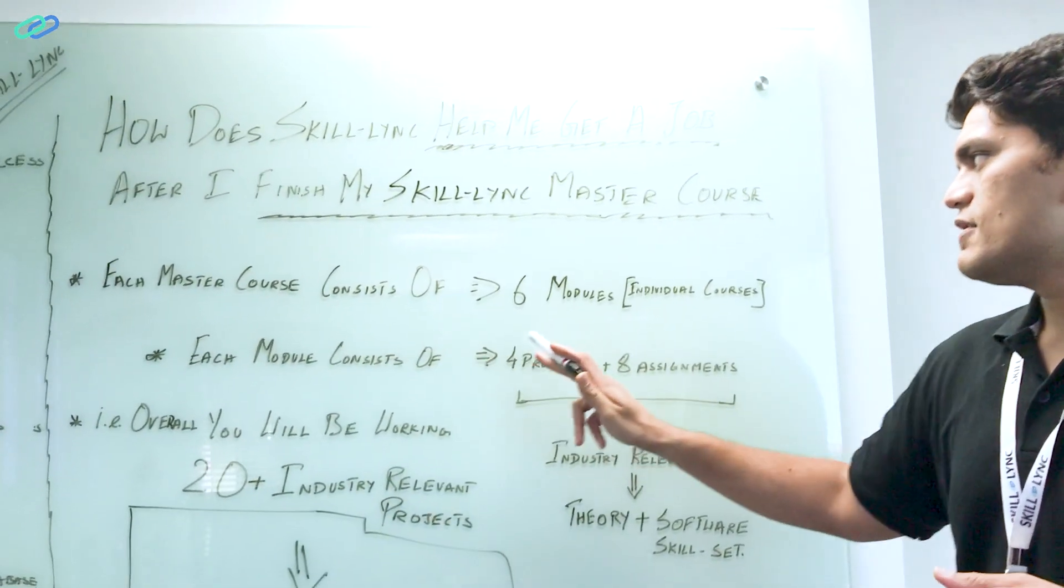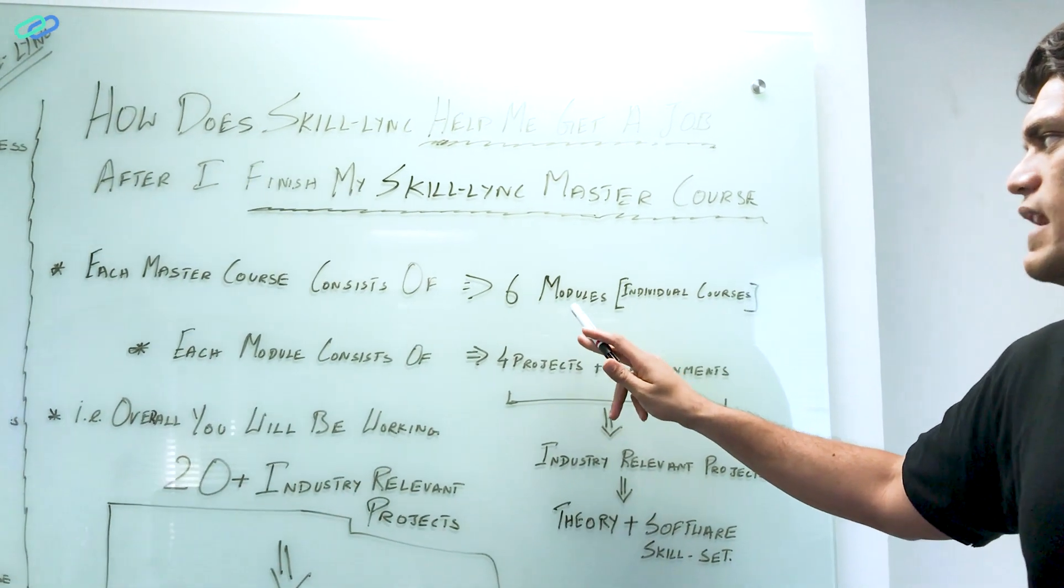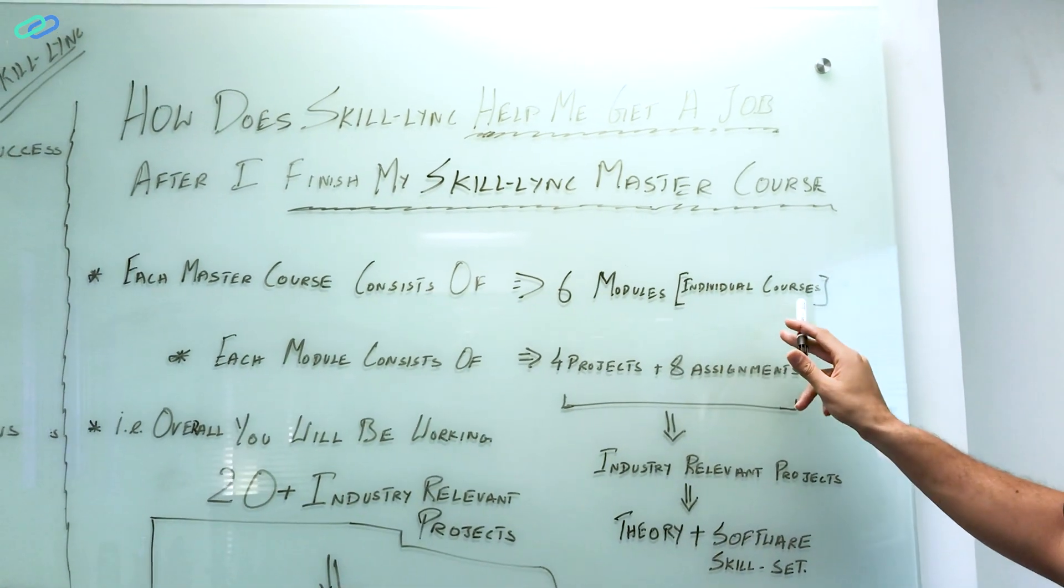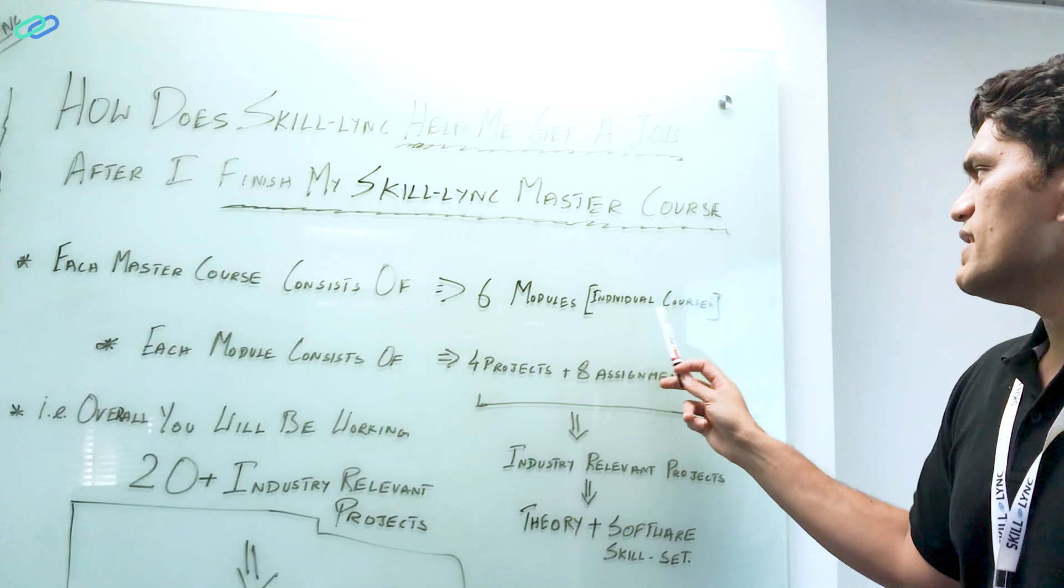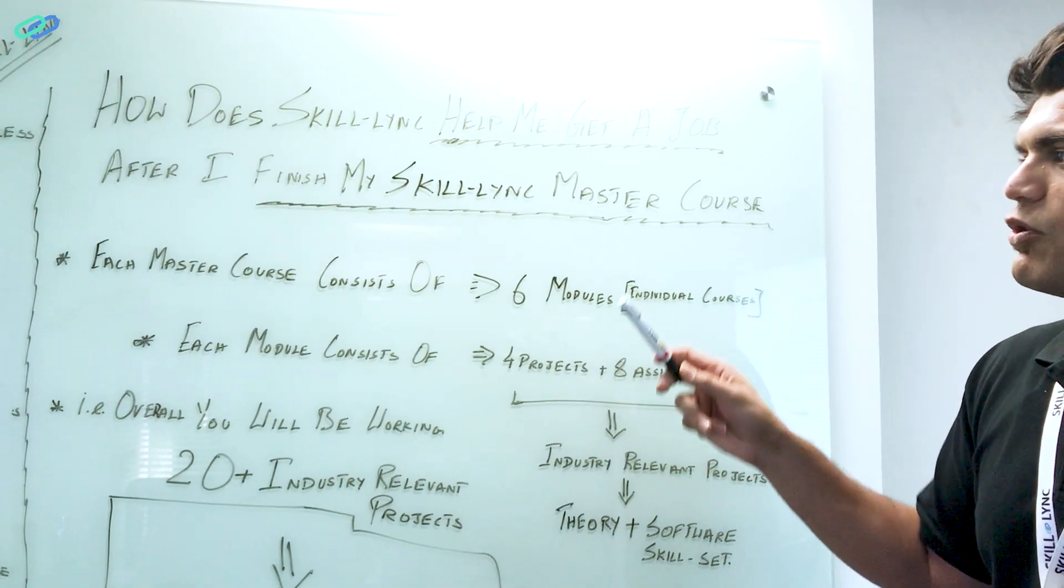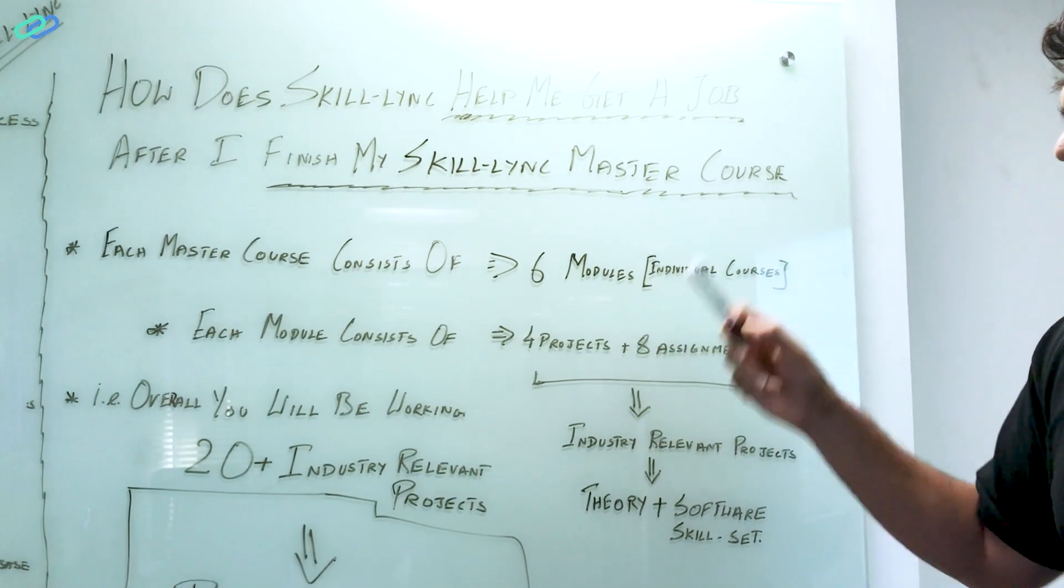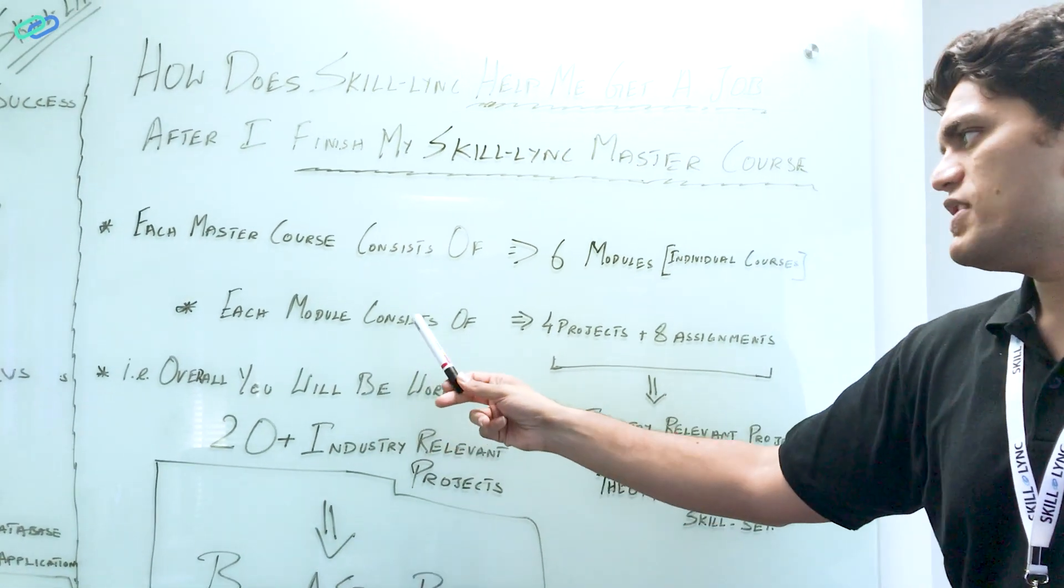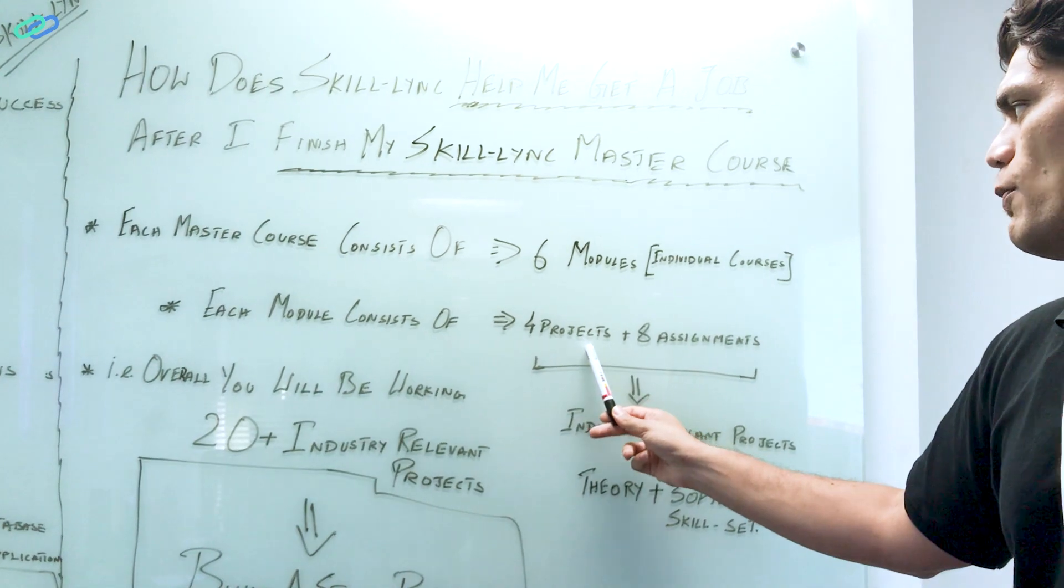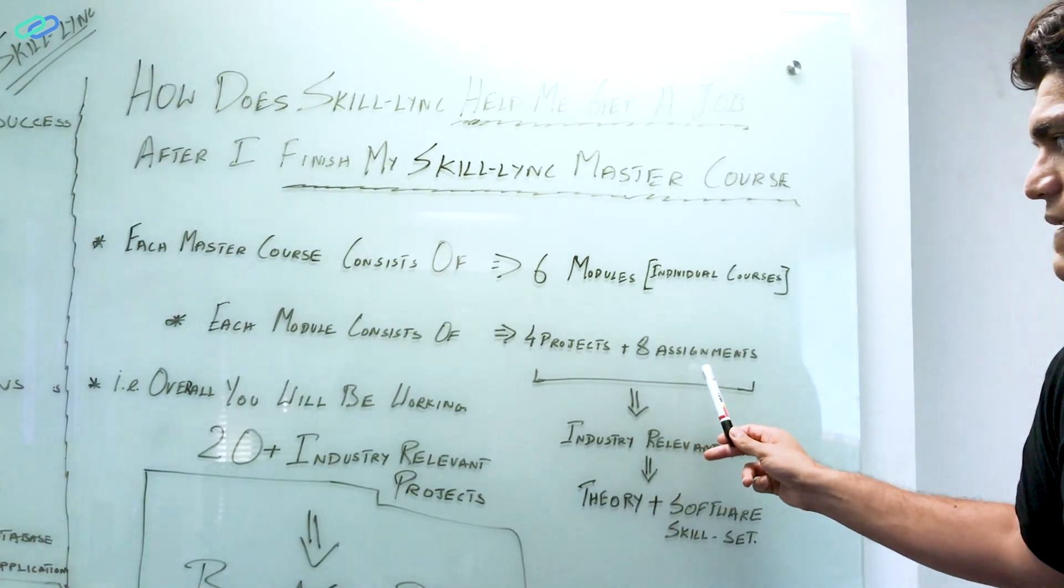Each master course consists of six modules. You can think each module as one individual course. When you enroll in one master course, you are enrolling in six individual courses in a particular domain. It can be a CFD domain, FEA domain, or design domain.